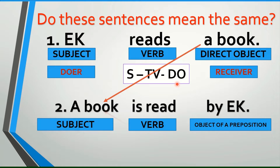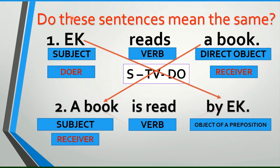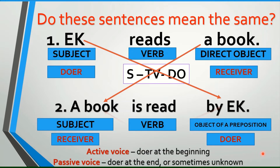This time, a book, which is the receiver of the action, becomes the subject. And the subject, which is the doer of the action, becomes the object of a preposition. An object of a preposition is any noun or pronoun after a preposition. By is an example of a preposition. So, EK functions as the object of the preposition in the sentence. Now, have you seen the difference of these two sentences in terms of their structure? They actually mean the same thing. Only their difference is their structure. The verbs differ in voice — active voice when the doer is at the beginning and used as the subject.